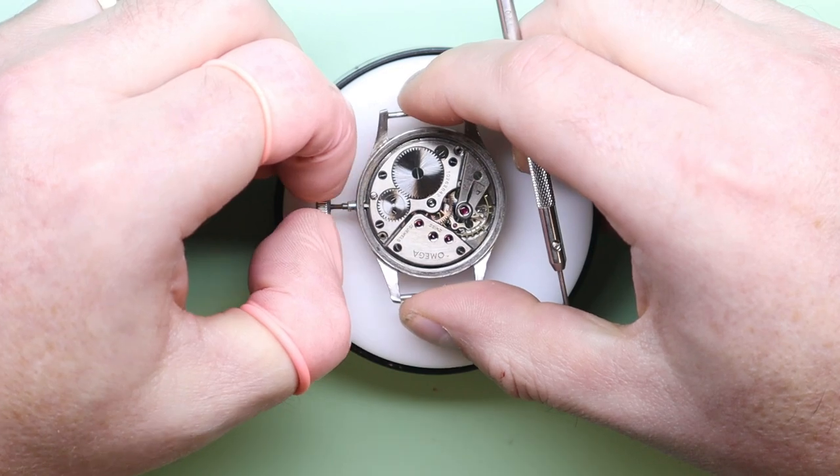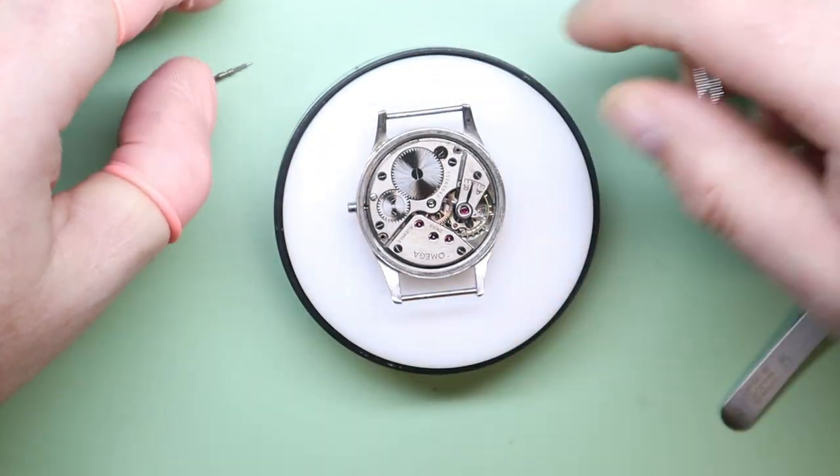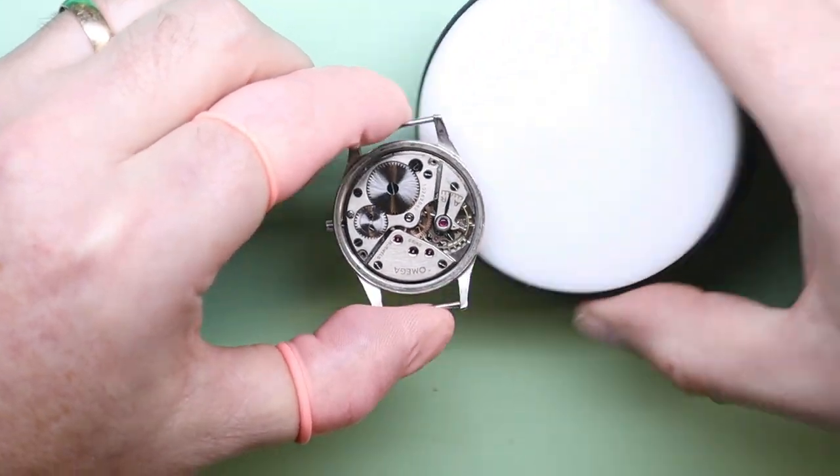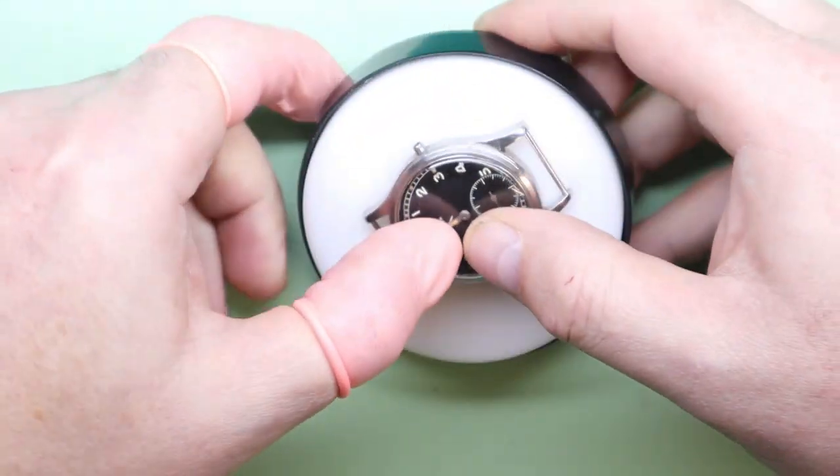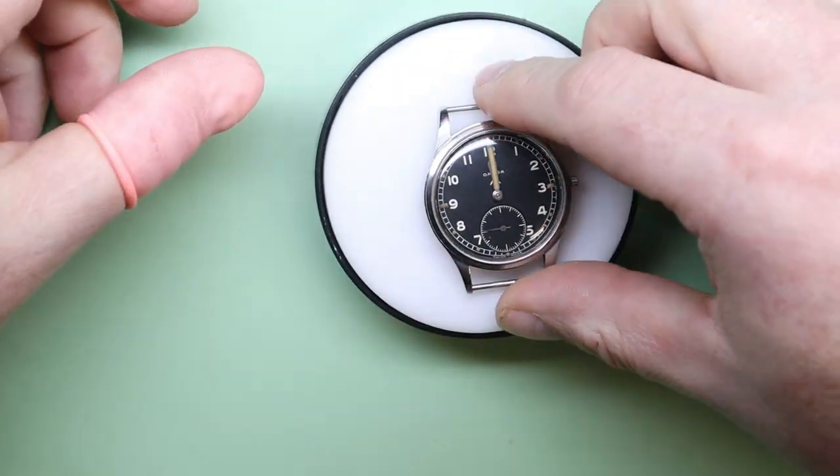We're just going to undo or loosen the setting bolt. On this movement the setting bolt is not held in place by the bridge plate, so be careful not to undo it fully because it will just come out and fall out on this particular movement.